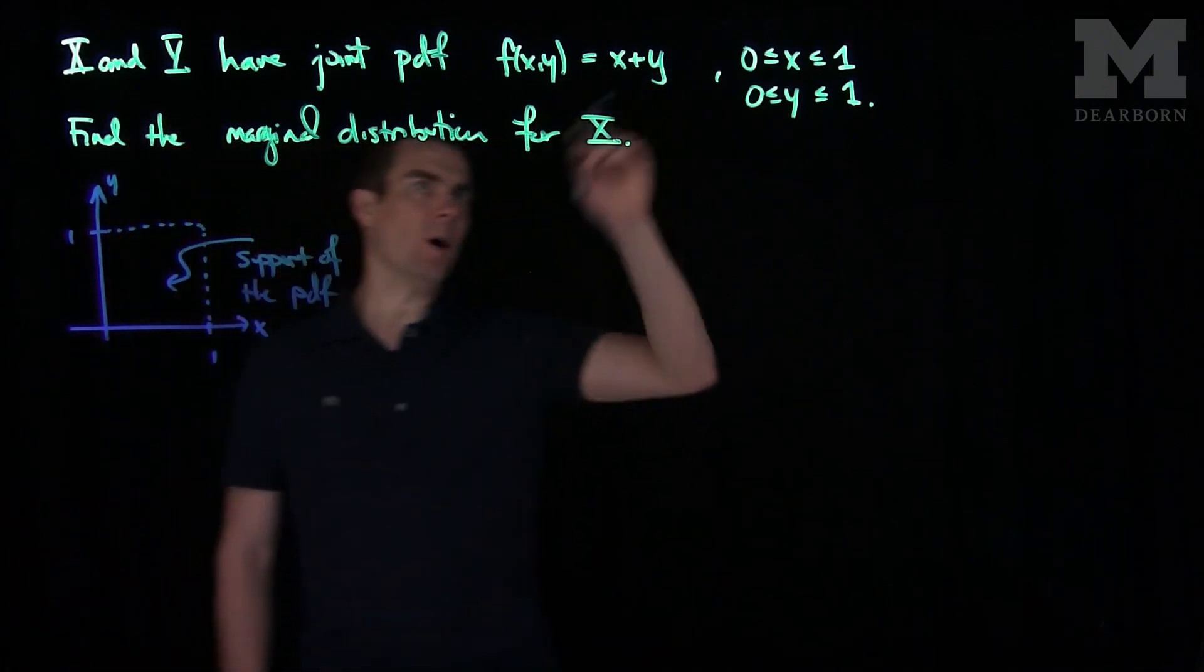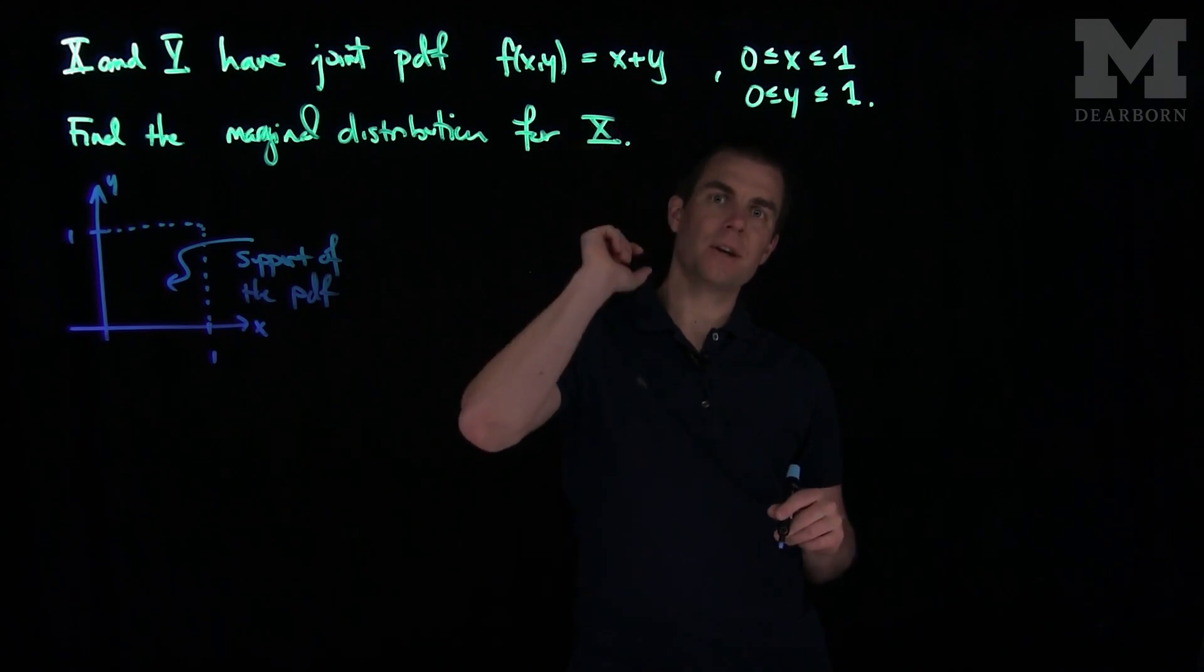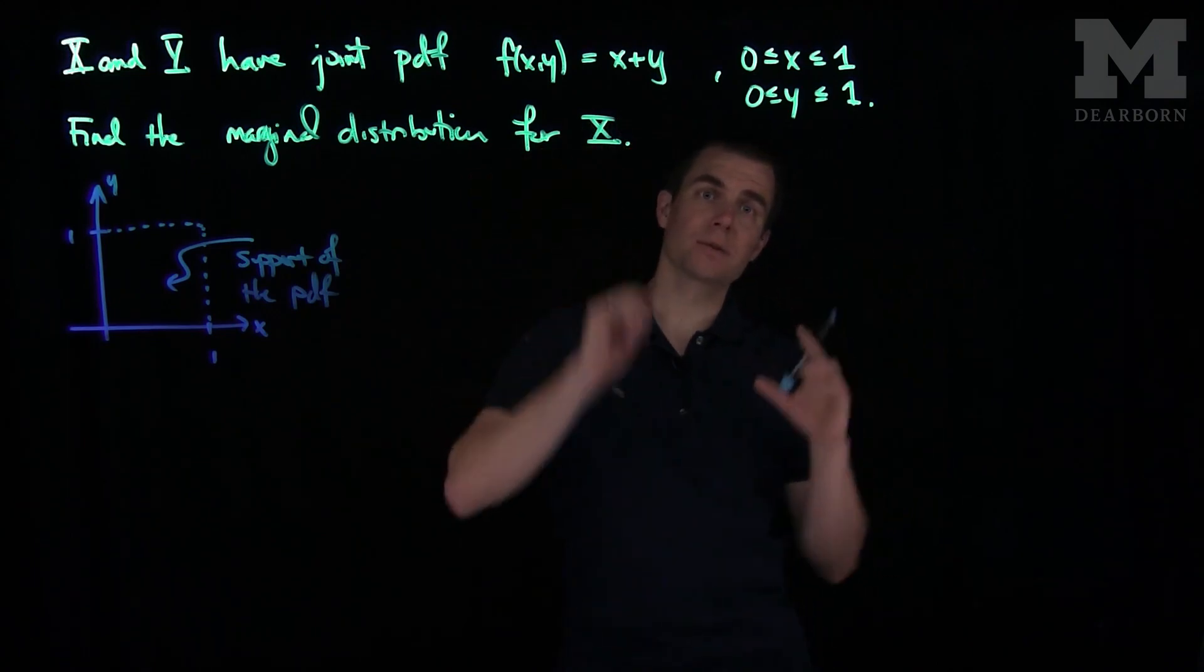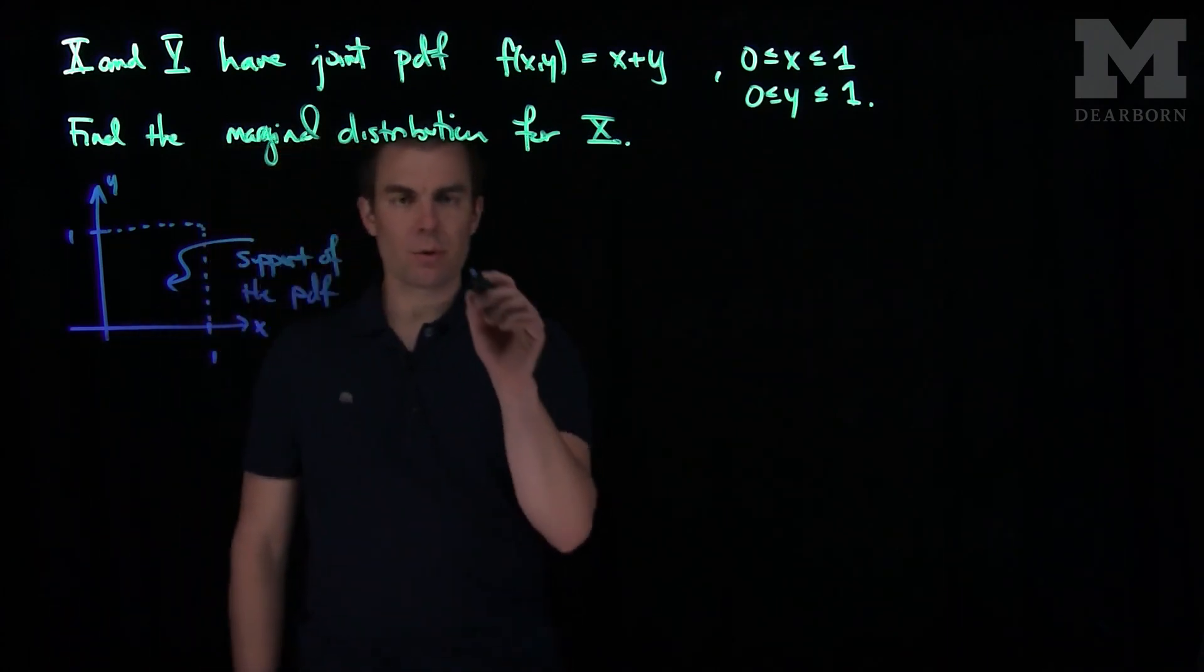And it is 0 everywhere else. When we specify this region, it is implied that the joint pdf is 0 everywhere else. That is the support of the pdf. To find the marginal, we recall the definition.